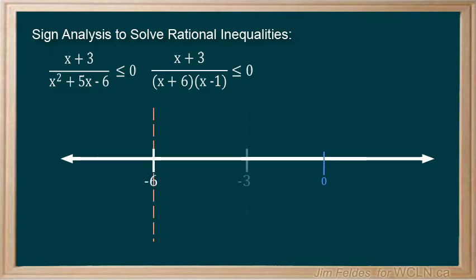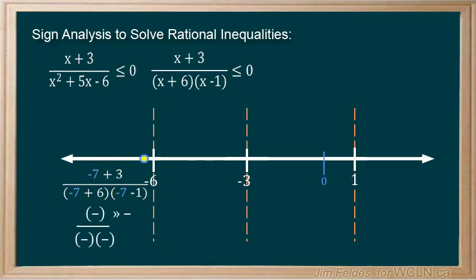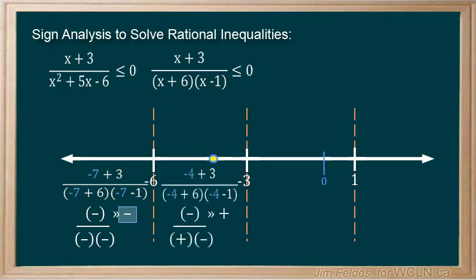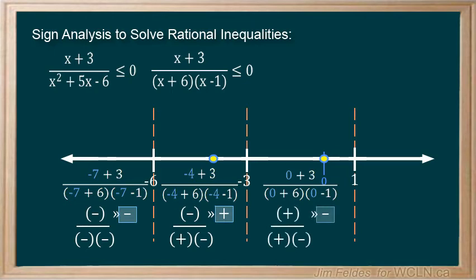Set up the number line with roots, and we can start by checking the value negative 7 in the first interval to see if this interval is positive or negative. We get three negatives, which is odd, therefore a negative interval. In the second, if we test negative 4, there are an even number of negatives, so positive. Then 0 gives us one negative, so a negative interval. And the last one is all positive, as usual.